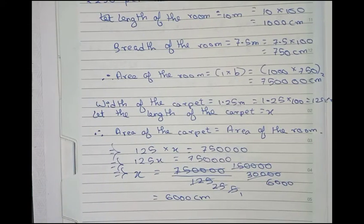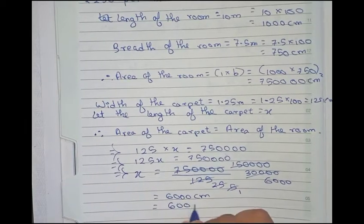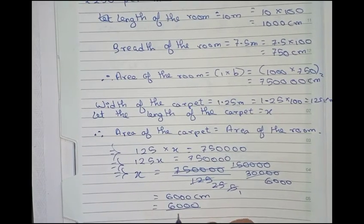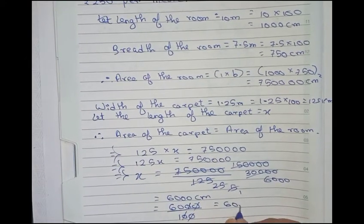We convert into meter first as in the question it is given the cost is 250 per meter. So it will be 6,000 divided by 100, we cut the zeros, so it equals to 60 meter.